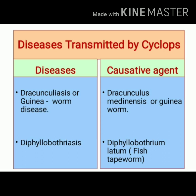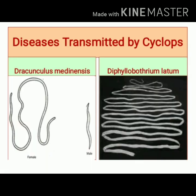Diseases transmitted by Cyclops include Dracunculiasis and Diphyllobothriasis. Dracunculiasis is also known as Guinea Worm disease, caused by Dracunculus medinensis or Guinea Worm. Diphyllobothriasis is caused by Diphyllobothrium latum, the fish tapeworm. Images show the causative agents of both diseases; the female Guinea Worm is longer than the male, and the length of the fish tapeworm should also be noted.